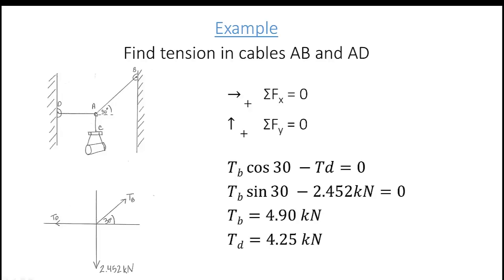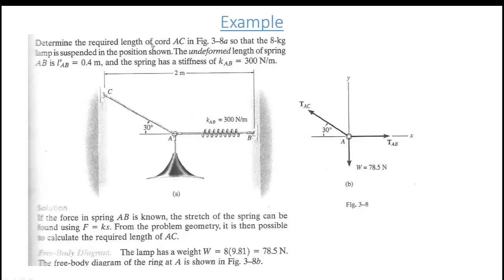Here's another example: determine the required length of chord AC so that the 8 kg lamp is suspended in the position shown. The undeformed length of spring AB is 0.4 m, and the spring stiffness is KAB = 300 N/m. We take the center clasp, treat it as a particle, draw a free body diagram, and identify the forces acting on it to apply particle equilibrium.